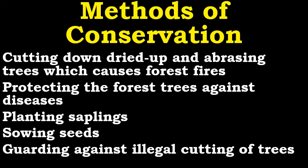Methods of conservation include: cutting down dried-up and uprooted trees which cause forest fires, protecting forest trees against diseases, planting saplings, sowing seeds, and guarding against illegal cutting of trees.